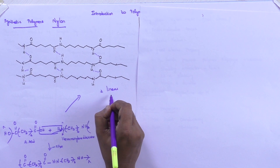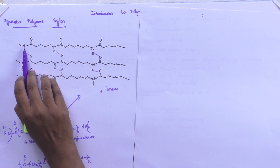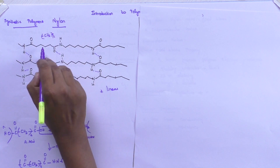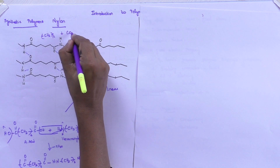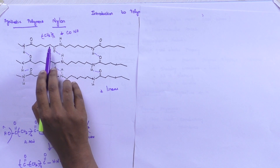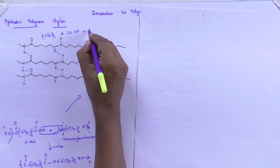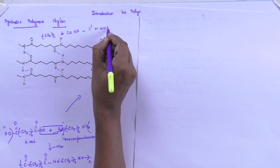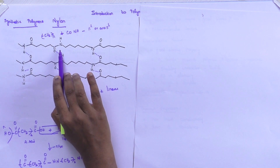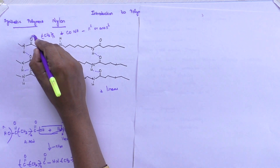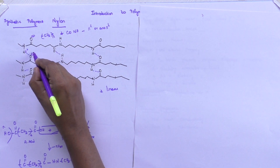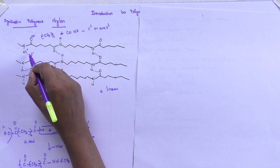Nylon polymers — if you see, they are separated by (CH₂)ₙ and C=O and N-H. You can see this C=O, N-H, and (CH₂)ₙ — this is a nylon segment. They may be either parallel or anti-parallel. There is polarity — a negative charge on the oxygen atom, so the polarity of the oxygen atom is negative and a slightly positive charge on the hydrogen atom — delta minus and delta plus.